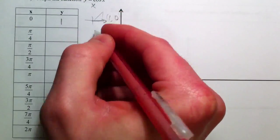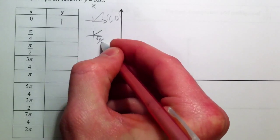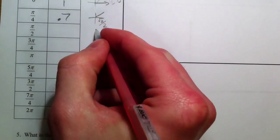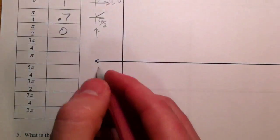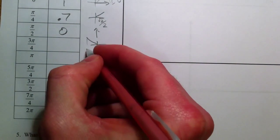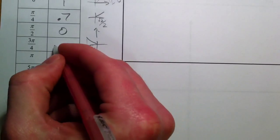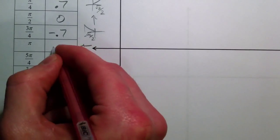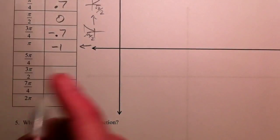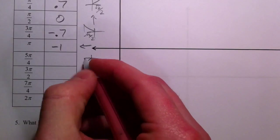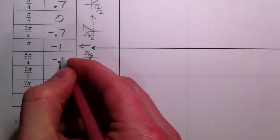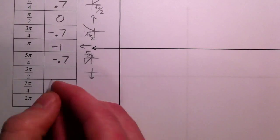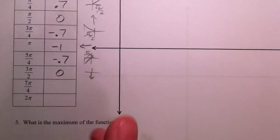x is root 2 over 2 at pi over 4, so that's approximately 0.7. Pi over 2, the x value is 0. 3 pi over 4 is negative root 2 over 2, so that's negative 0.7. At pi, going straight across, you're going to the left one, so that's negative 1. 5 pi over 4 is still on the left-hand side, so it's going to be negative root 2 over 2, or negative 0.7. 3 pi over 2 is going straight down, so you're not going left and right at all at 0.